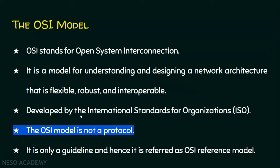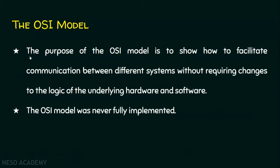This OSI model was developed by the International Standards for Organizations, well known by its acronym ISO. ISO developed this OSI model. A very important note is that the OSI model is not a protocol, so it is not implemented. It is only a guideline for two different computers or systems that want to communicate with each other — they can follow these guidelines. Hence it is referred to as the OSI reference model. The purpose of the OSI model is to show how to facilitate communication between different systems without requiring changes to the logic of the underlying hardware and software.